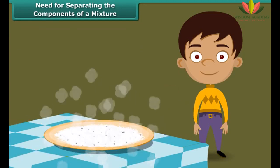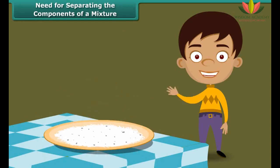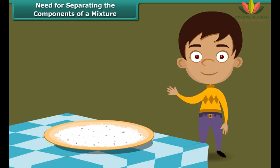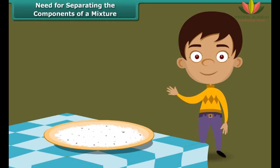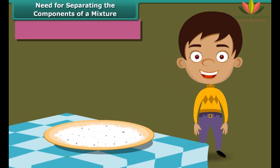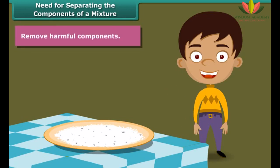Similarly, we find stones, mites, etc. in rice, wheat, pulses, etc. We remove them before cooking because they are harmful to our body. So, the second reason for separation is removal of harmful components.